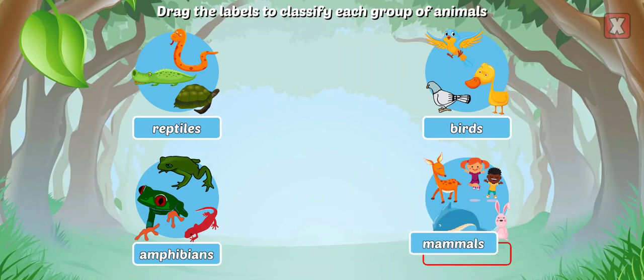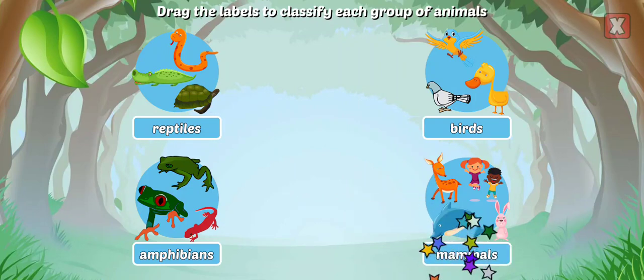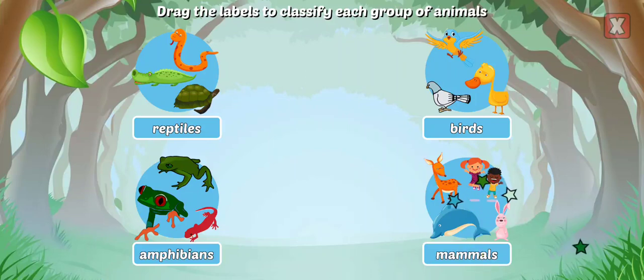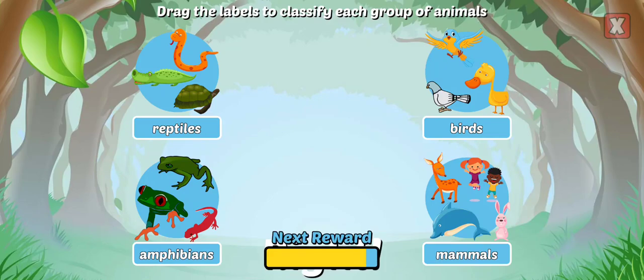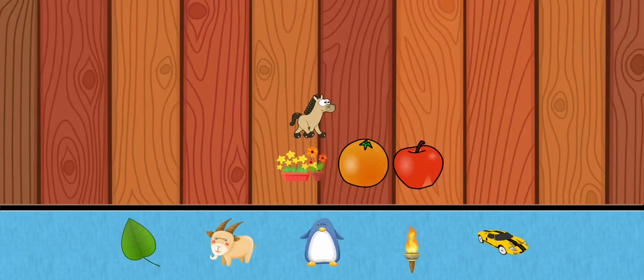Mammals give birth to live young, have hair or fur, and are warm-blooded. Right! Pick a new sticker!